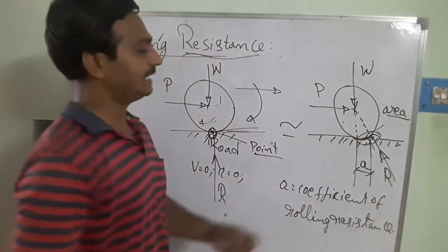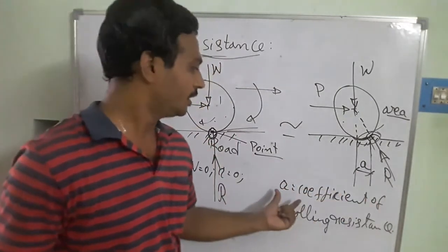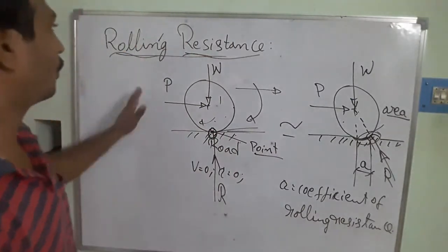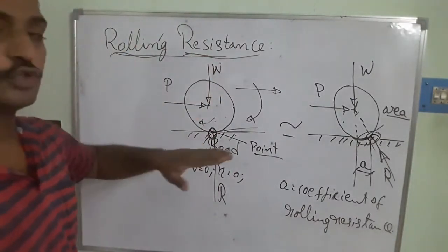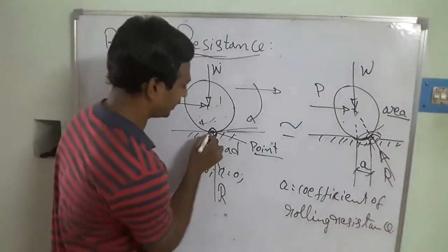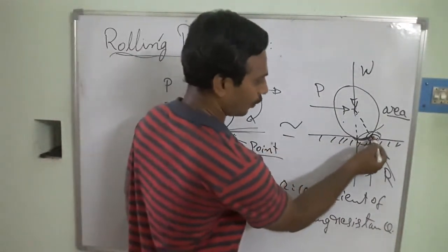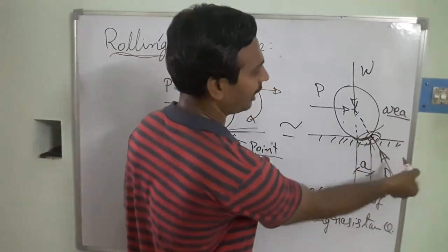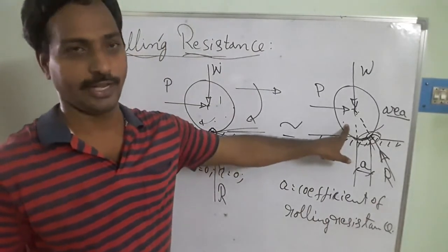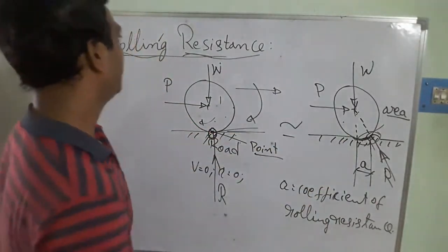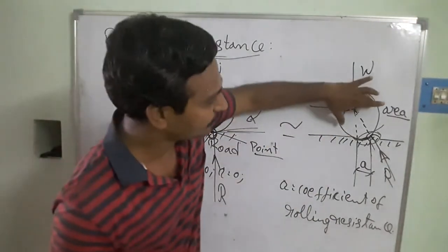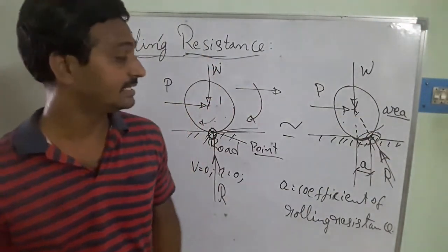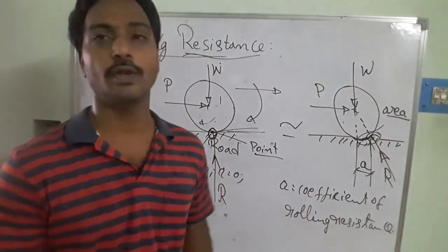The forward length of deformation 'a' is called the coefficient of rolling resistance. When the road deforms, a resistance force is generated opposing the motion of the body. This is why rolling resistance occurs — either the wheel or the road deforms, and that deformation creates resistance to rolling.